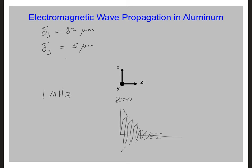The wavelength in the aluminum is 2π over β. And we already calculated β to be, at 1 megahertz, 12,200. So at 1 megahertz, the wavelength is 515 micrometers.